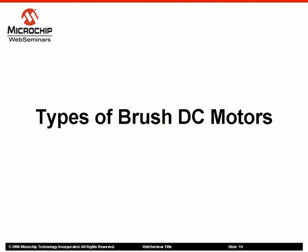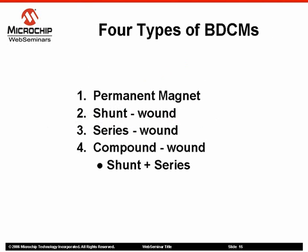Now let us take a look at the different types of brush DC motors. There are four types of brush DC motors. The first type is the permanent magnet brush DC motor. Second, the shunt wound brush DC motor. Third, the series wound brush DC motor. And fourth is the compound wound brush DC motor, which is a combination of both the shunt and series wound brush DC motors.